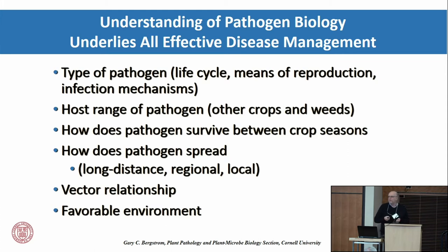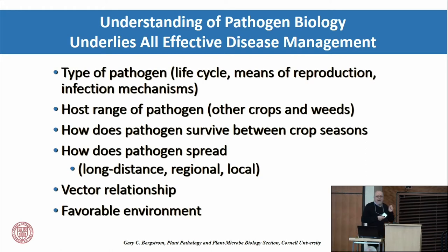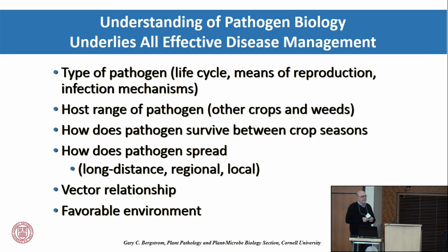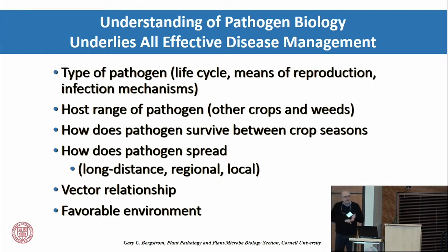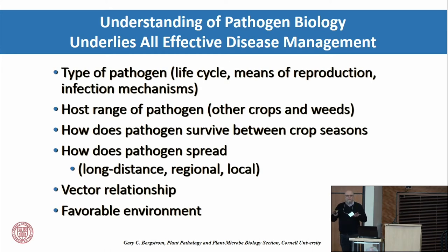How does a pathogen survive from one growing season to the next — in debris of previous crops or freely in the soil? How does the pathogen spread? Do spores spread very locally within a field? When we talk about spores of things like powdery mildews and rust fungi, they have to overwinter on a living plant somewhere, then can be dispersed in air currents over a continent. For something like eyespot disease on corn, a specific pathogen with no wind-borne stage, it has to hang out in corn debris. The way you manage those diseases is totally different.